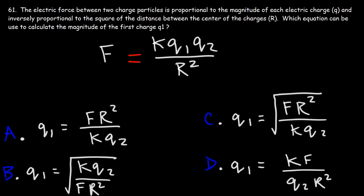The electric force between two charged particles is proportional to the magnitude of each electric charge and inversely proportional to the square of the distance between the center of the charges. Which equation can be used to calculate the magnitude of the first charge Q1, and how can we isolate Q1?